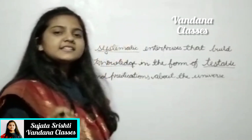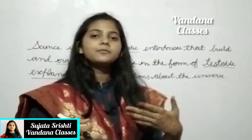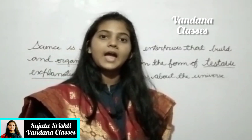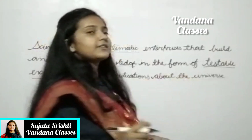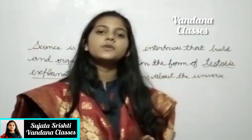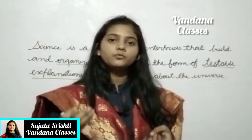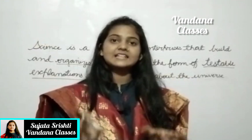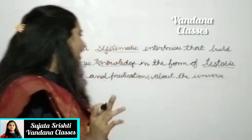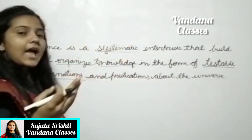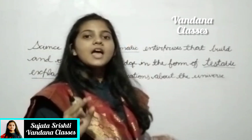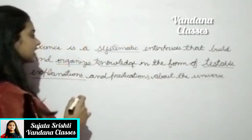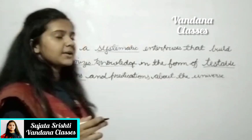Knowledge is a skill of anything — we have the skill of doing the activity we have to do. Testable is the process by which we check whether an object or knowledge exists in the universe or not. And when we have done the experiment, we have to explain it — this is the explanation and the prediction about the universe.